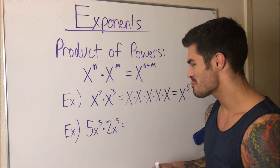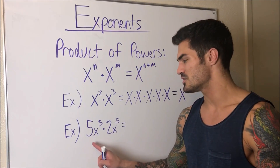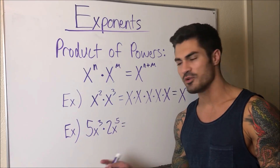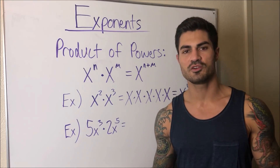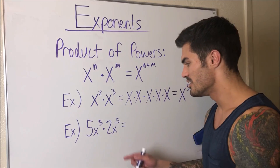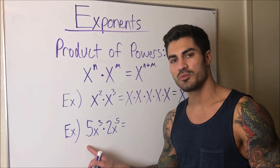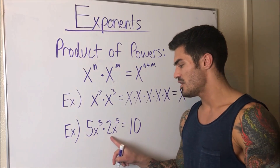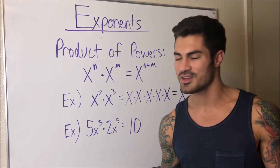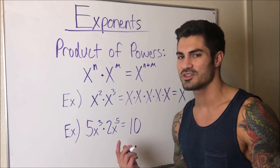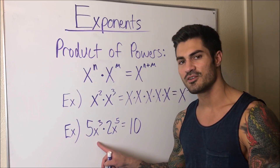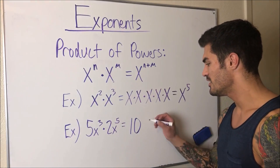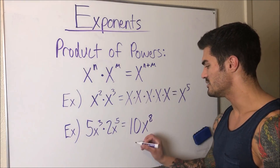Let's do another example with numbers: 5x³ times 2x⁵. This is four things being multiplied. Because it's multiplication, order doesn't matter — I can move things around. I multiply the constants: 5 times 2 gives me 10. Then I apply the product of powers rule: 3 + 5 = 8. So the result is 10x⁸.